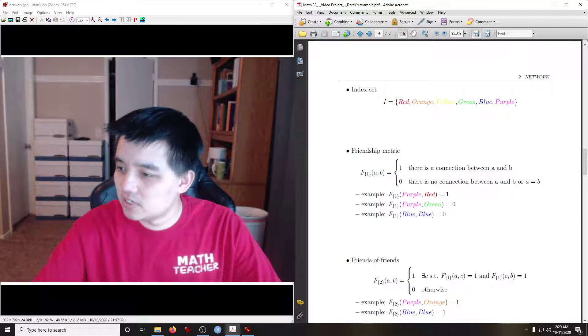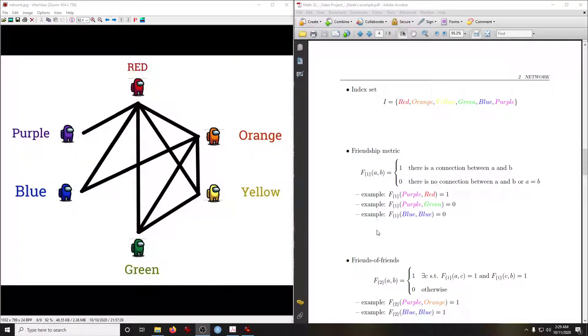For our convenience, I'll leave the network on the left side of our screen while we go into some definitions. The index set, the set of nodes, are six characters: red, orange, yellow, green, blue, purple.